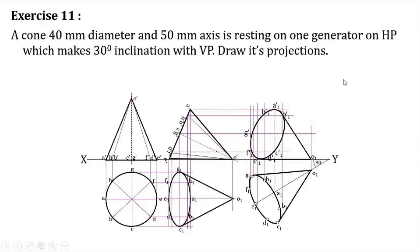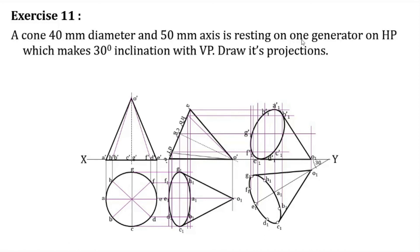Note down this question carefully. In this problem, the axis inclination is determined by one generator on HP making a 30 degree inclination with the VP. There is a variant of this question where the drawing is noticeably different. The distinction is that in this problem the generator on which the cone is resting makes the 30 degree angle with the VP — understanding this difference is important for solving the variant correctly.